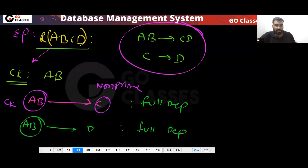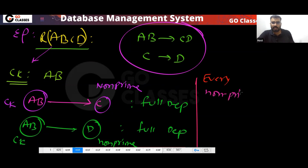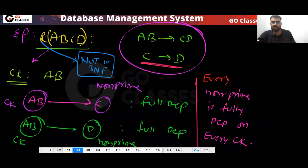Notice that A,B is the candidate key and C,D are non-prime attributes. Every non-prime attribute is fully dependent on every candidate key. But still, this relation is not in 3NF — because C,D → D is a violation of 3NF.